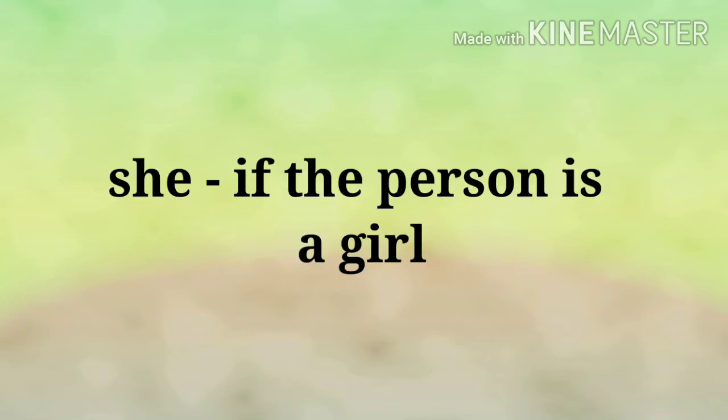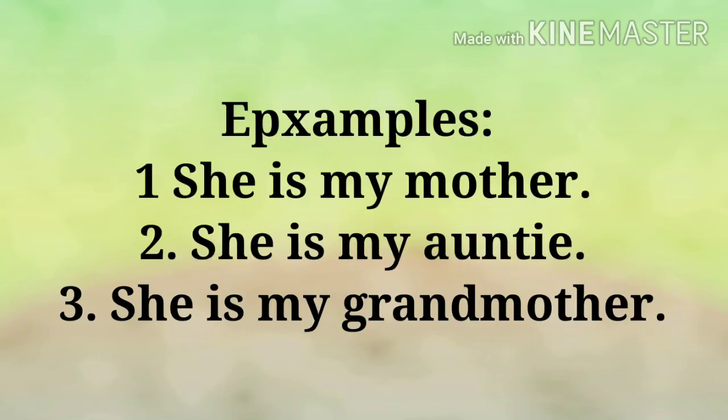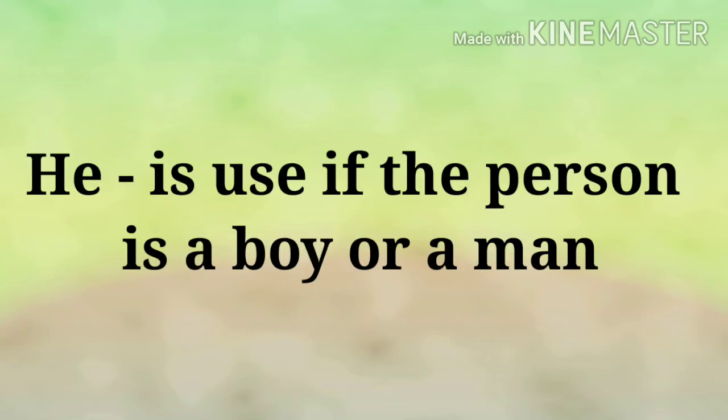We use 'she' if the gender that we're talking about is a girl or a woman. For example: she is my mother, she is my auntie, she is my grandmother. While we use 'he' when we are talking of a boy or a man.